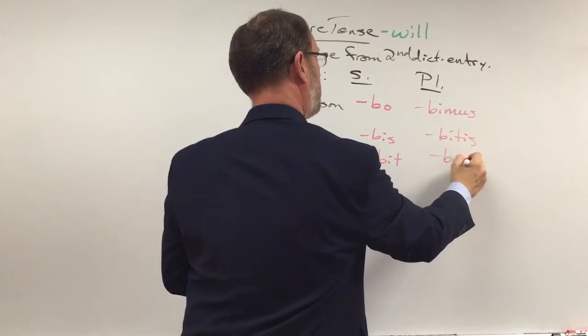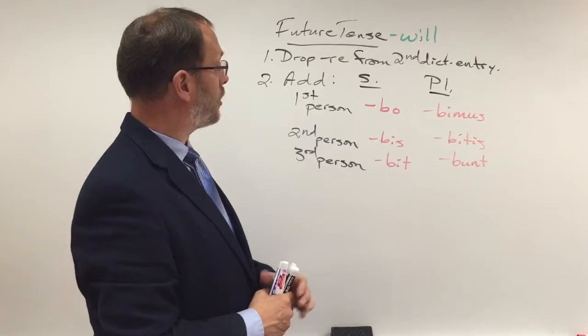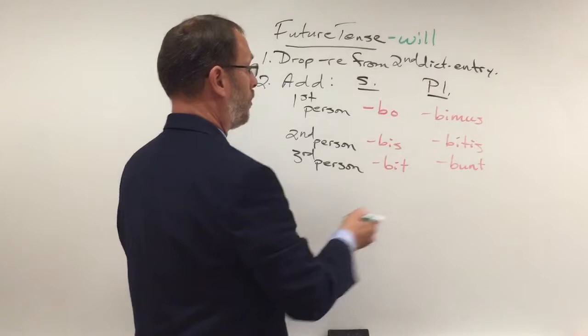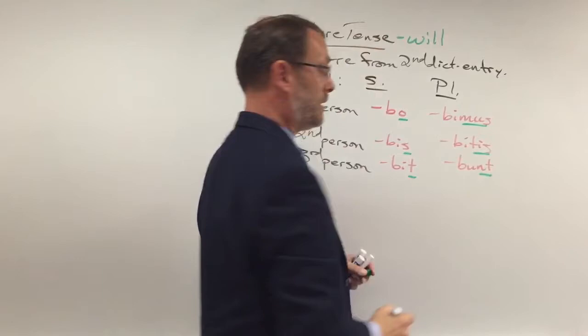Now if you look carefully, some of that should look familiar. Go through and underline right now the parts of those endings that look similar to what we've had in present tense — pause the video and give that a try. What you should have underlined would be the O, S, T, MUS, TIS, NT. It's the same endings we've had before, with just a little bit more on the front end.